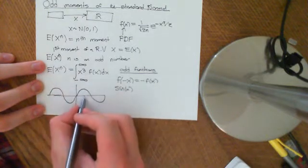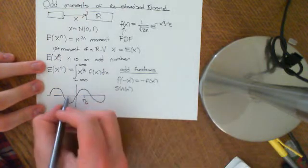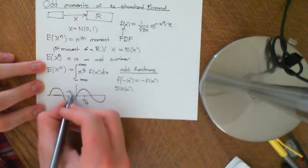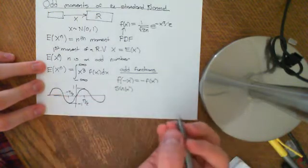So if I take for instance pi over 2 here, f of negative pi over 2, so if I put negative pi over 2 in, is equal to negative 1, which is negative of what f of pi over 2 was.